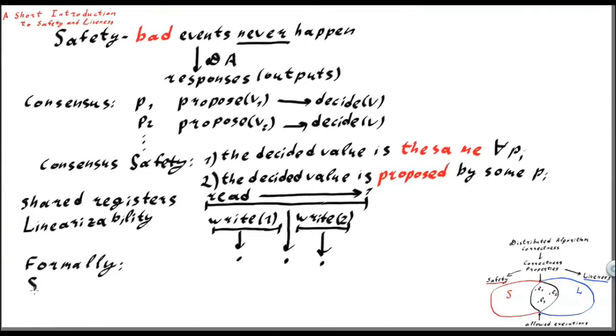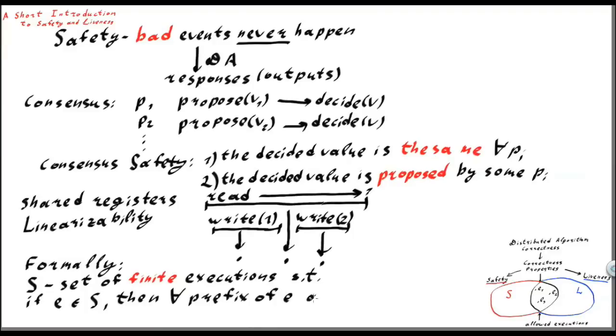More formally, a safety property S is a set of finite executions, such that if an execution belongs to the set, then any prefix of this execution also belongs to the set.